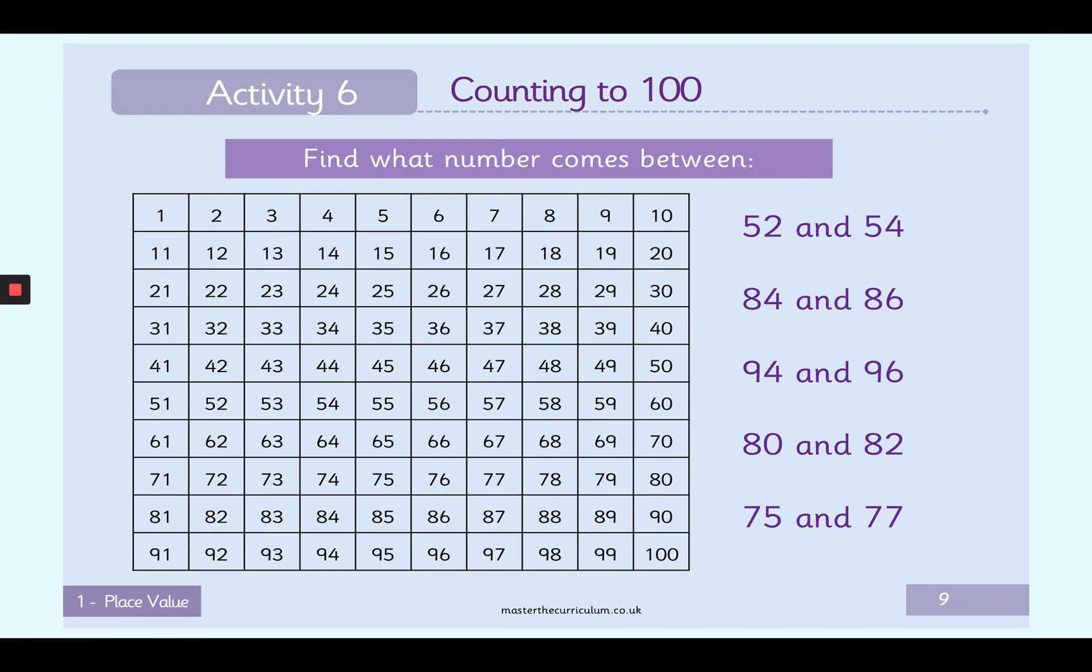Okay, well done. Your next activity is to find what number comes between, for example, 52 and 54. So who can find 52? Where is it on the grid? Well done. There it is. And where's 54? Excellent. Well done. So then what number comes between 52 and 54? Well done. It's 53. So can you pause the video and do the rest for all of these?